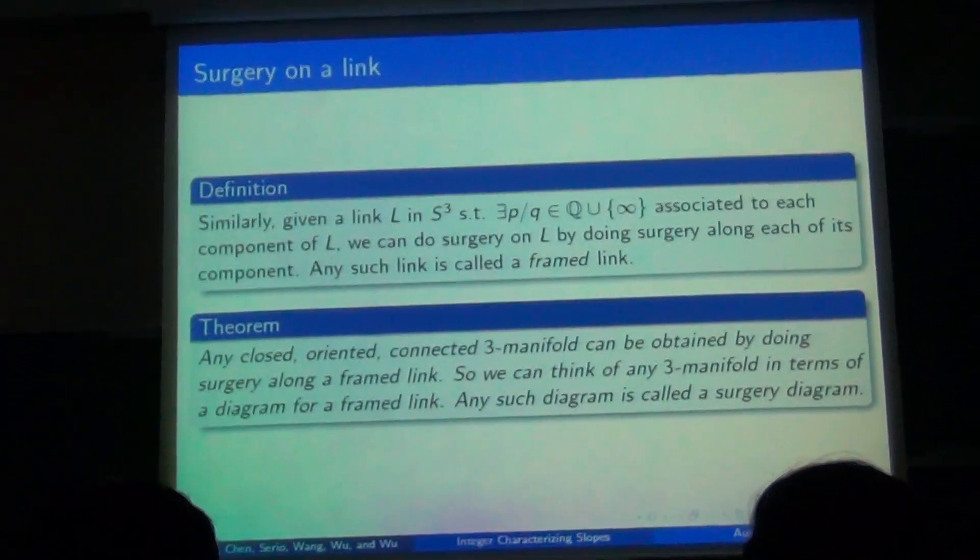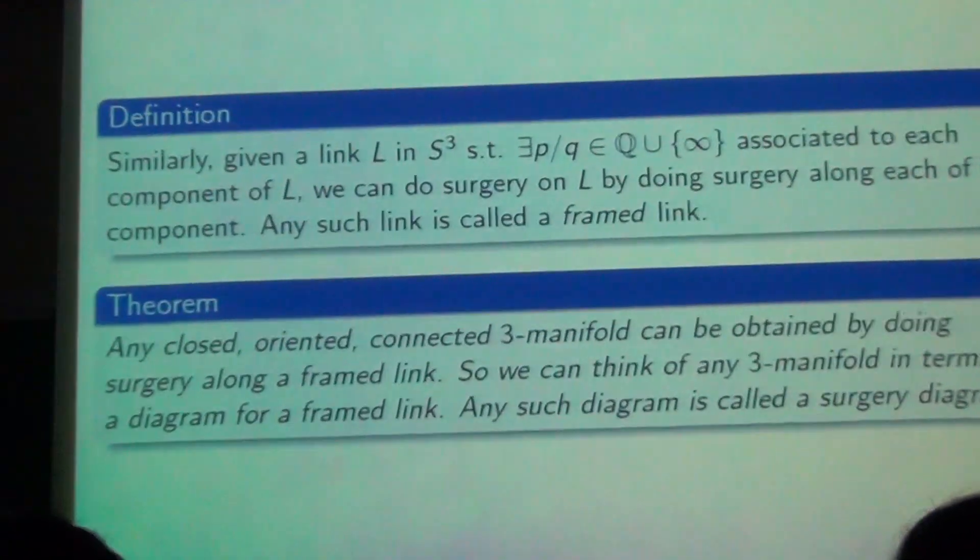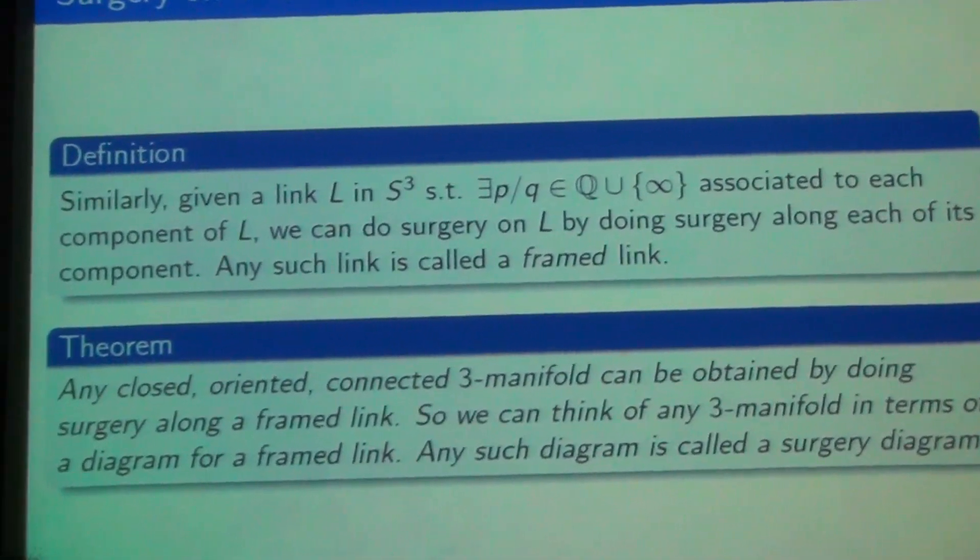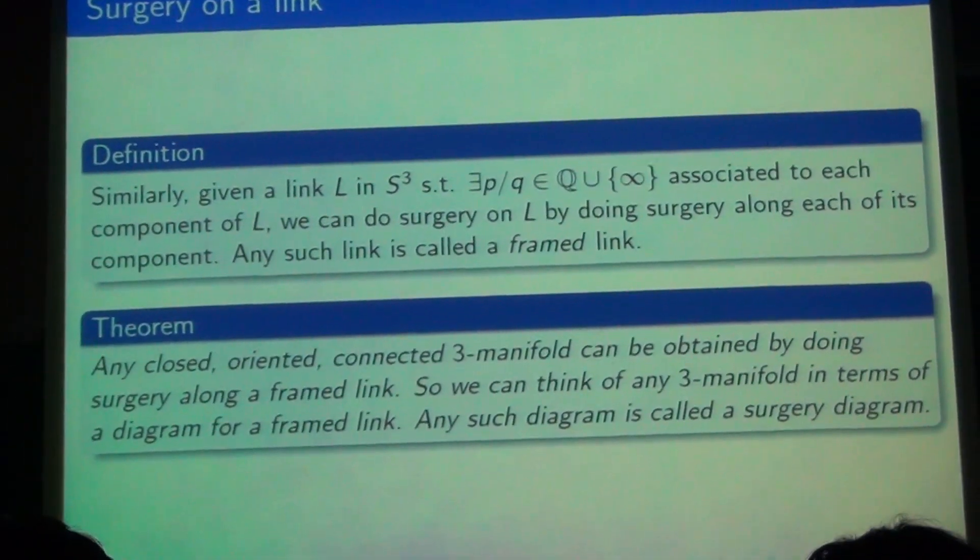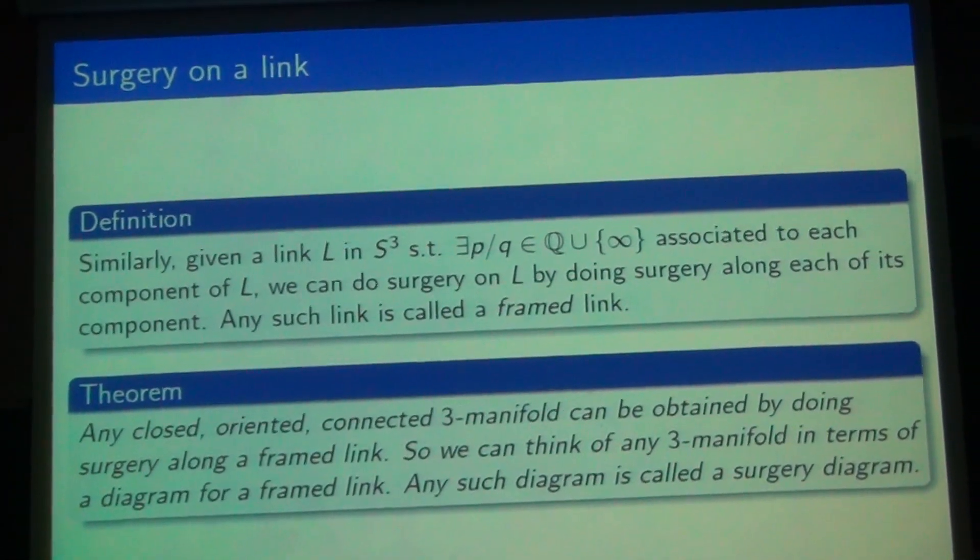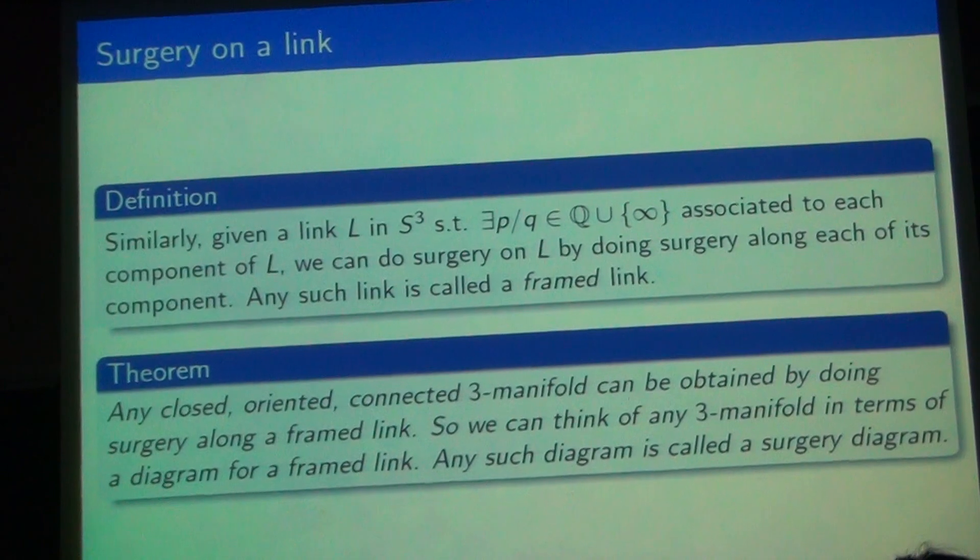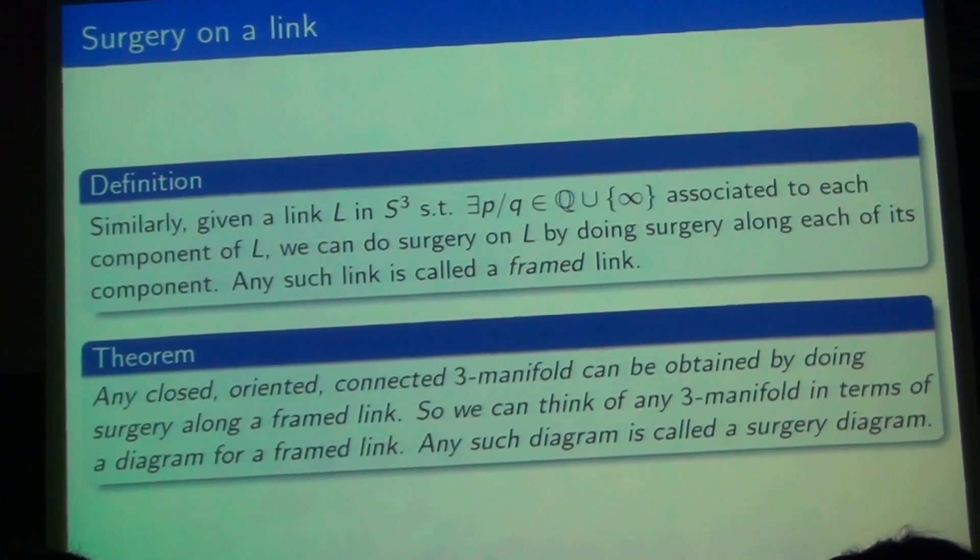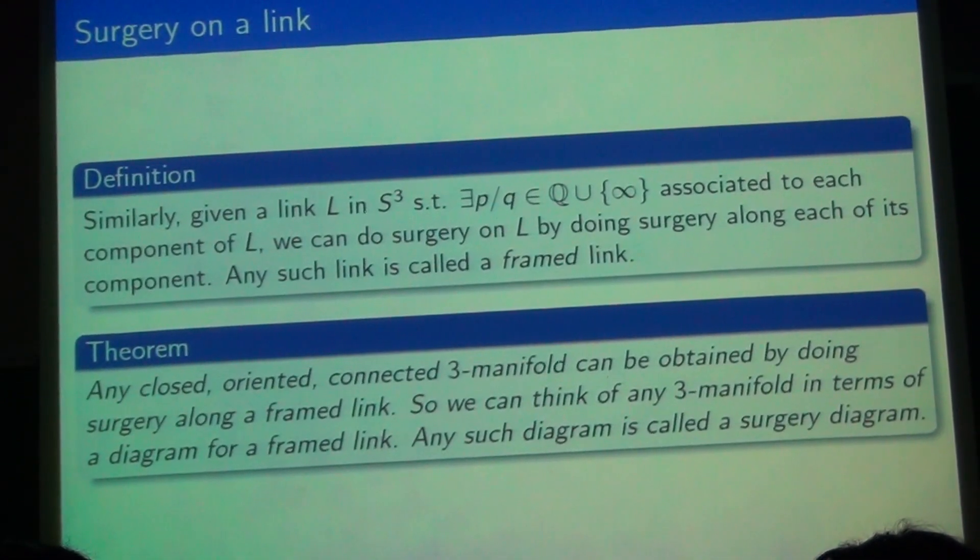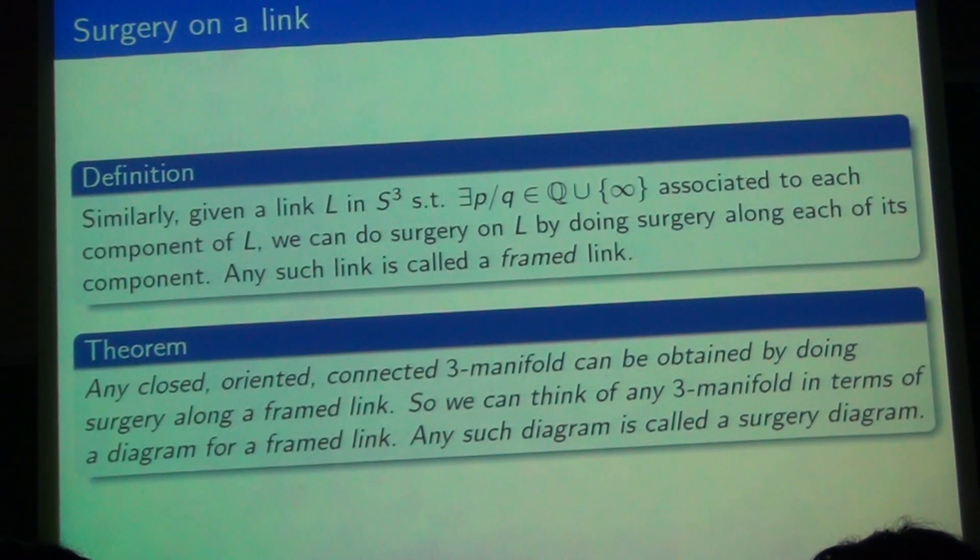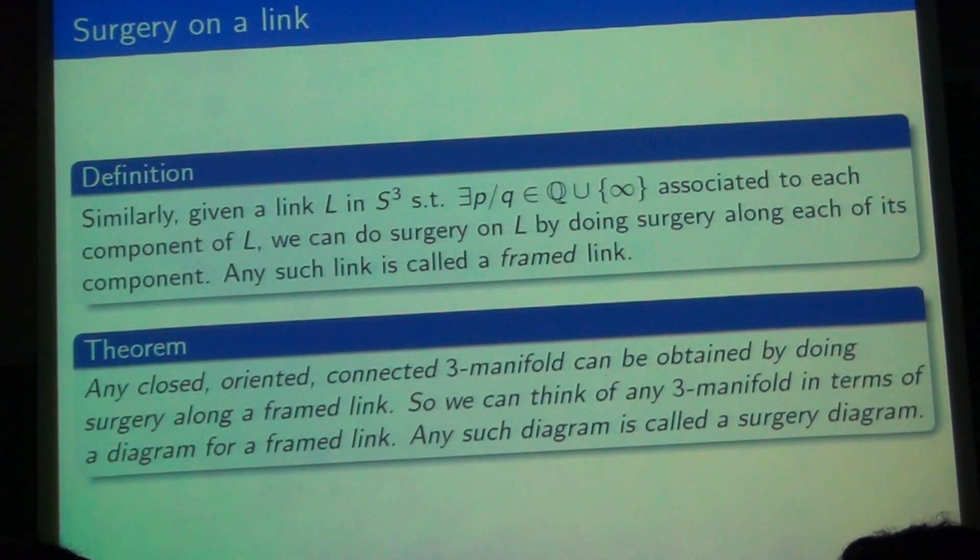And surgery on a link is naturally extended because the link is just disjoint union of knots. And it's interesting because if each p over q specifies the surgery coefficients of each of the link components, then we just do surgery on the link by doing surgery along each of these components. It's interesting because any closed, oriented, connected three-manifold can be obtained by doing surgery along a framed link.